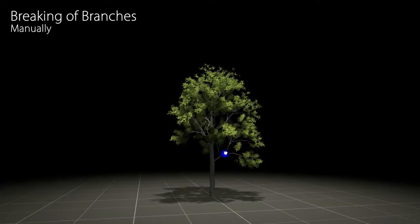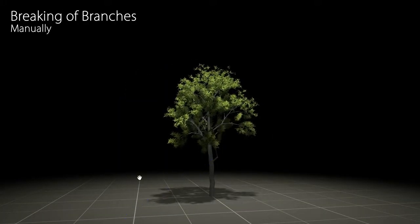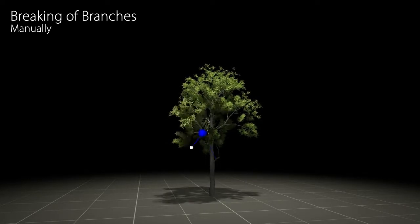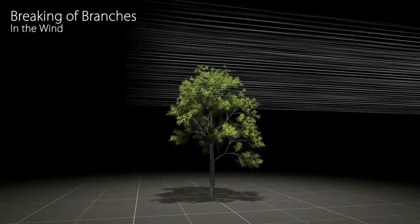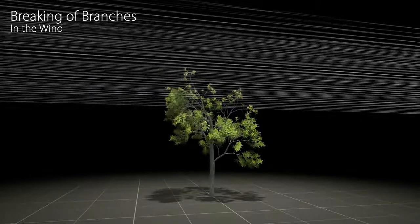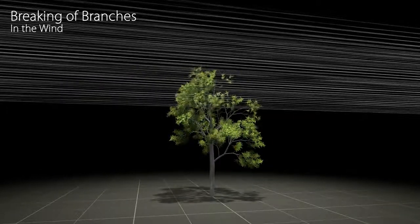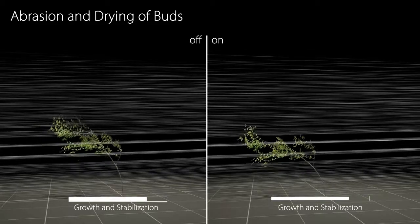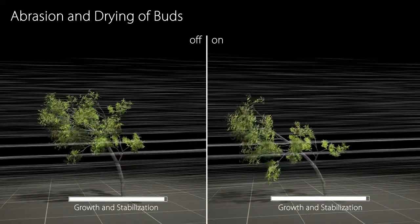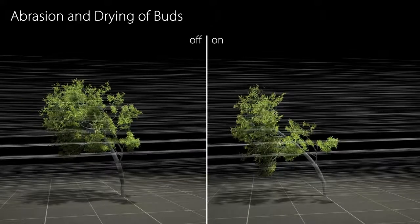Our system supports the breaking of branches when the stress on the branching structure exceeds a certain threshold. Due to a precise collision response of branches, even more complex phenomena such as the abrasion and the drying of buds can be modelled in our framework.